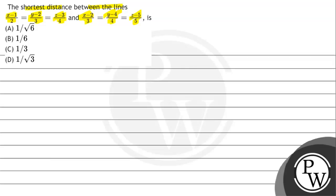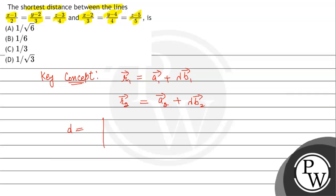So first of all, what concept will we use? Key concept: let us suppose the first equation of line is given as R1 vector = A1 vector + λ·B1 vector, and the second line is R2 vector = A2 vector + λ·B2 vector. So the shortest distance D = |( A2 - A1 ) · (B1 × B2)| / |B1 × B2|. We will use this concept to solve the equation.